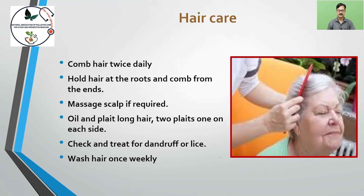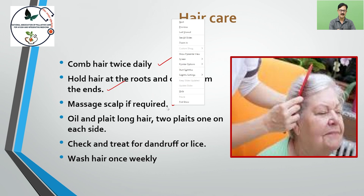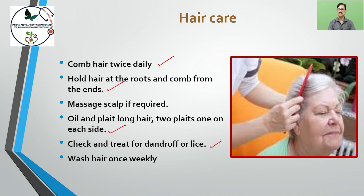For daily hair care, comb hair twice daily. Hold hair at the roots and comb from the ends. Massage the scalp as required. Oil and plait the hair into two plaits, one on each side. Check and treat the hair for dandruff or lice. Wash hair once a week.